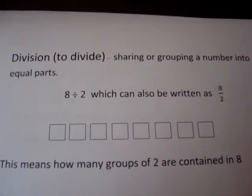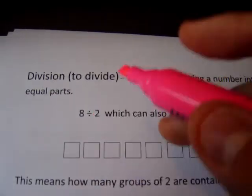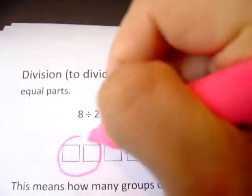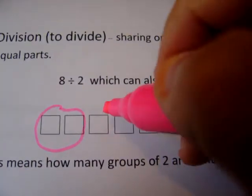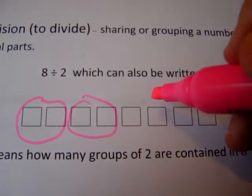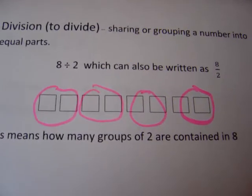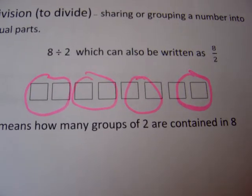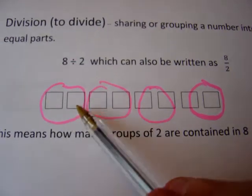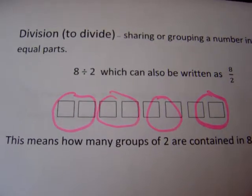Here are the 8 objects, namely squares, and I'm going to group them by twos. I'm going to circle these two, circle the next two, circle the next two, and circle the next two.